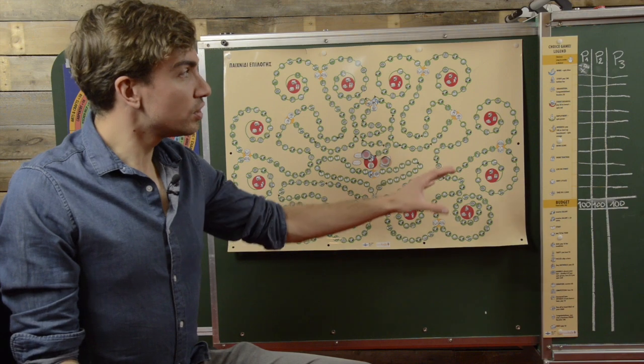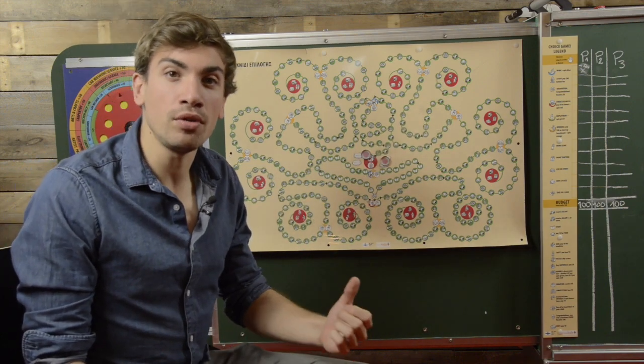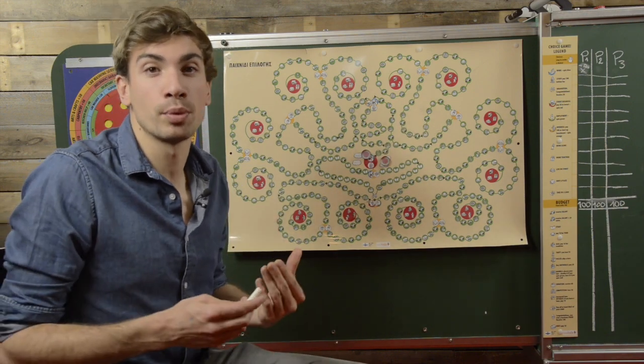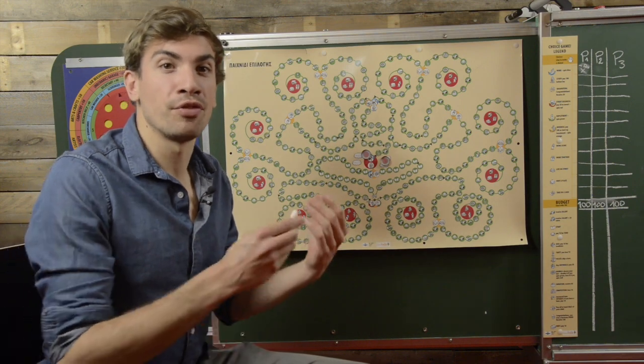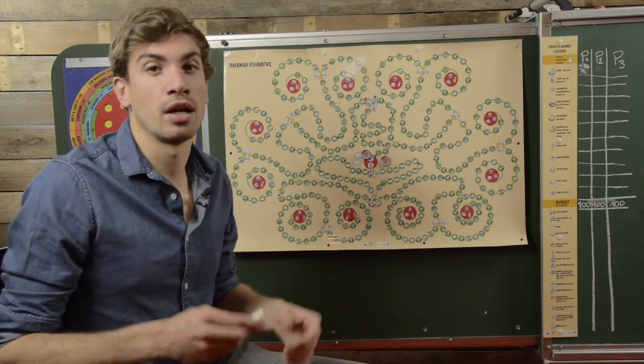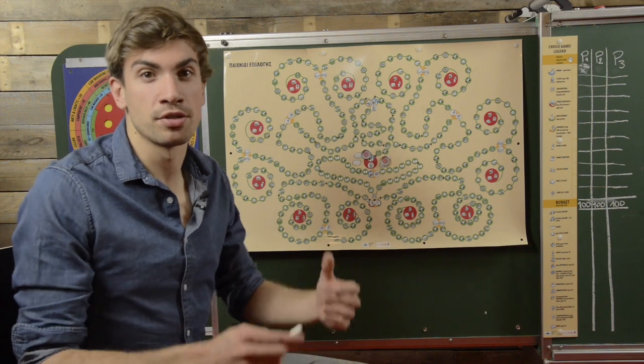So it's very important that you note all the choices down on the blackboard so that afterwards when the game is finished you can reflect with the children about the consequence of their choices that they made during the game.